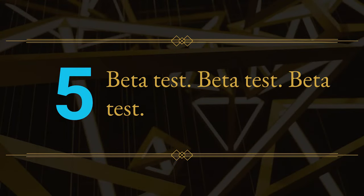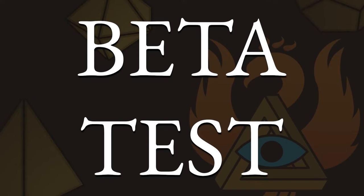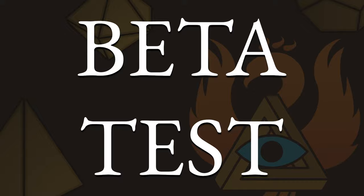Number five: beta test. Beta test. Beta test. Look at this poll — what's at the top? Beta testing. Is your game solvable? Is it too hard? Does it fit the audience? Do you know how long it takes to play? Do you know if people need hints? Do you know where they get stuck? Beta test and iterate.